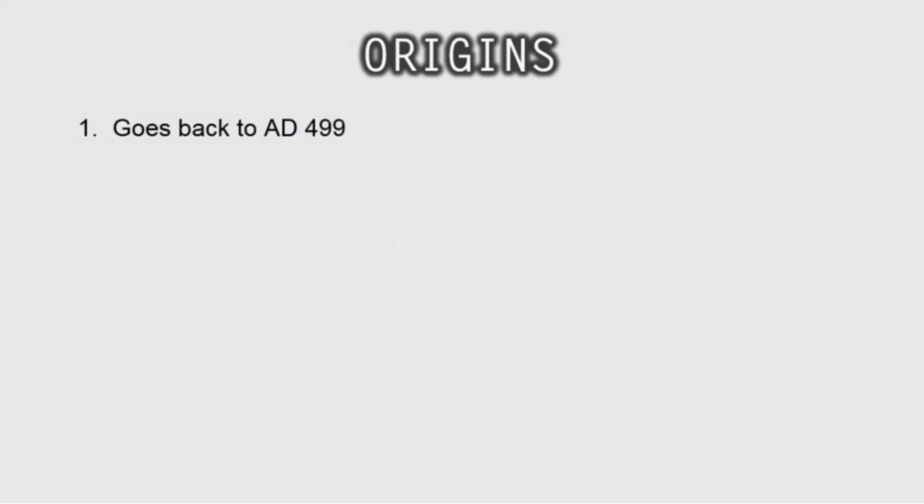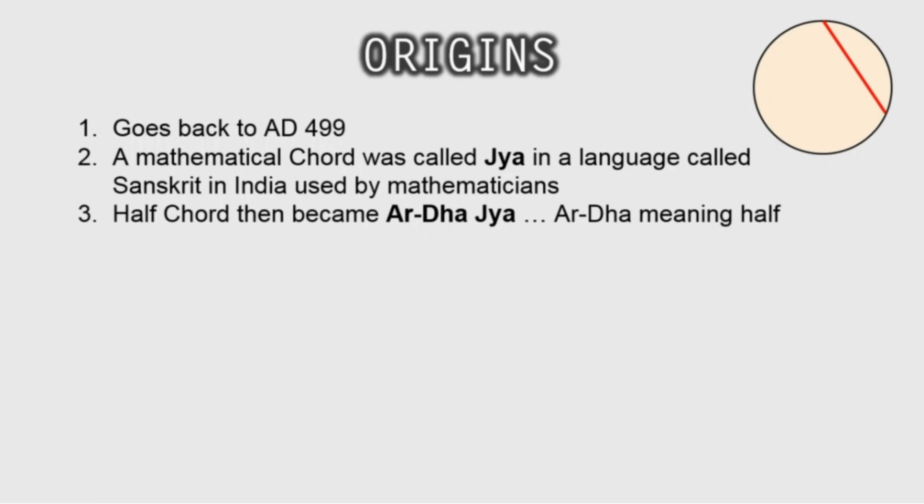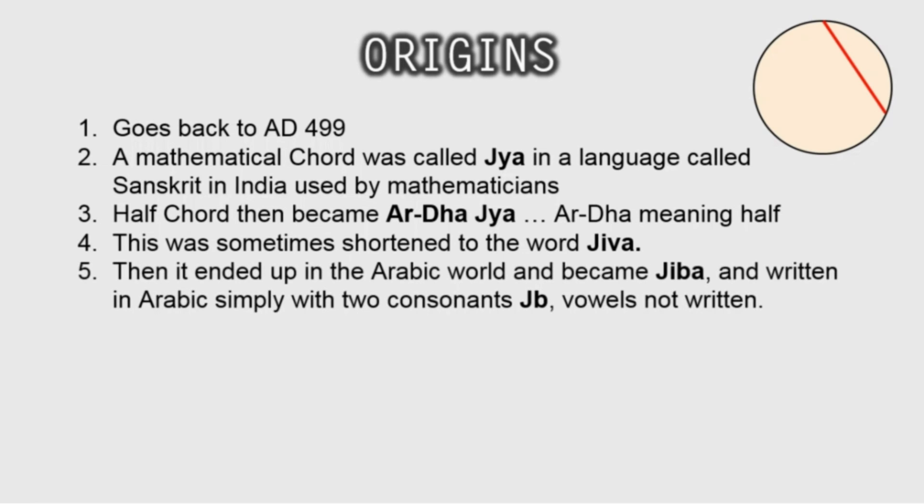But before we end this video, let's talk about where the word sine came from. The origins of the word sine can be traced back to AD 499. A mathematical chord was called Jha in a language called Sanskrit in India used by mathematicians. Half chord then became Ardha Jaya, Ardha meaning half. This was sometimes shortened to the word Jibba. Then it ended up in the Arabic world and became Jibba.